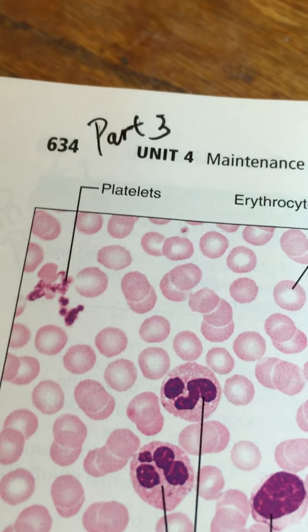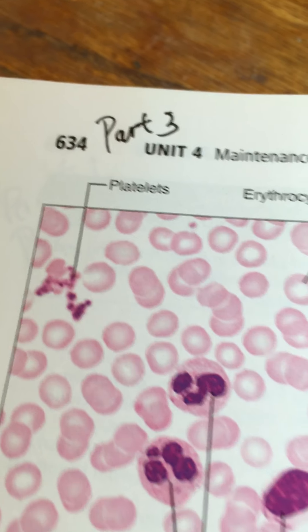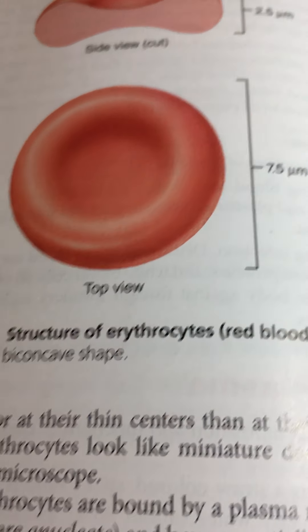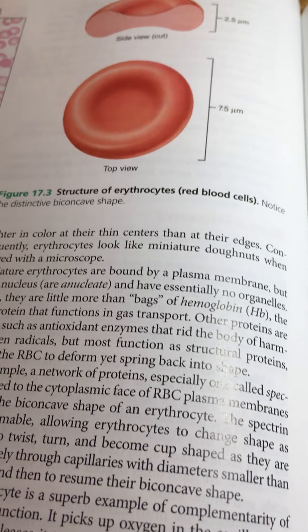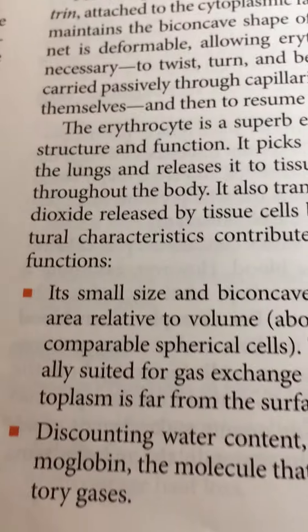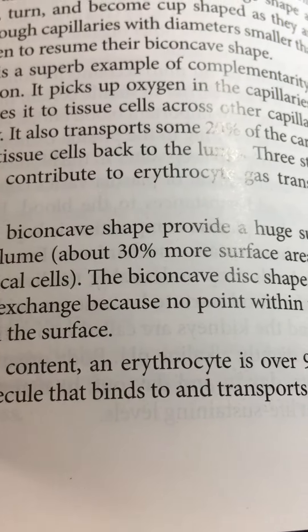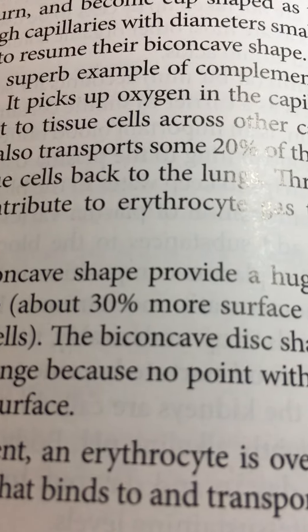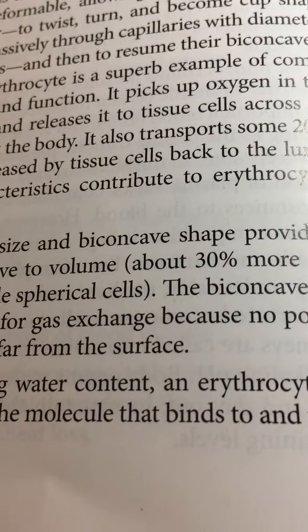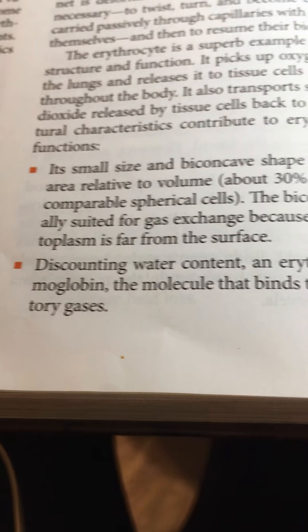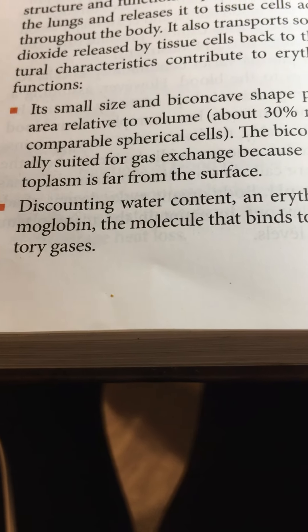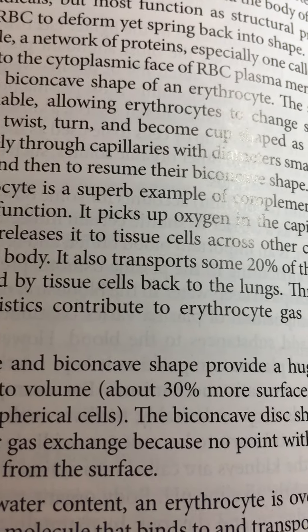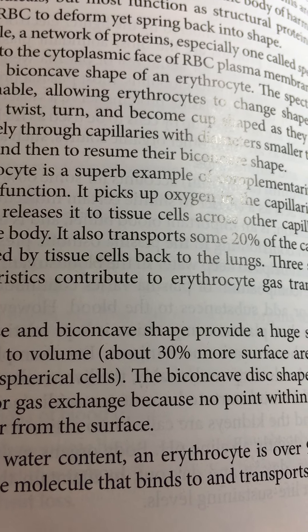We're on part three of the blood, on page 634, and we just took a look at the red blood cell — the erythrocyte — its structure. What's unique about it: it's relatively small compared to other cells, it's biconcave, and it's actually packed with hemoglobin, which it uses to transfer oxygen molecules. Discounting water content, an erythrocyte is over 97% hemoglobin.